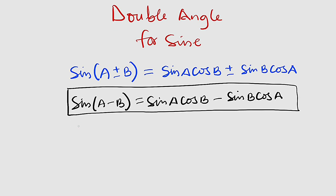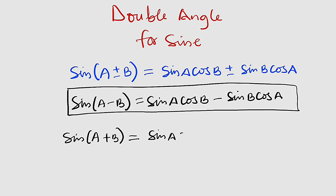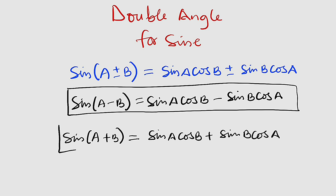Then for sine of A plus B, which is our point of interest, this is equal to sine of A multiplied by cosine of B, plus sine of B multiplied by cosine of A. So if you have addition, you use addition.